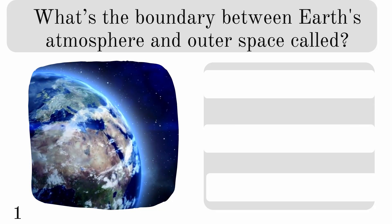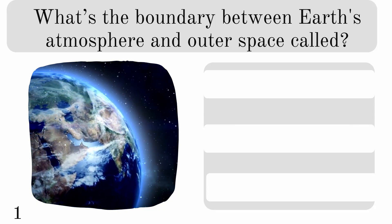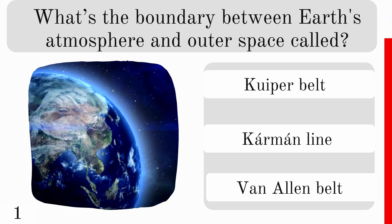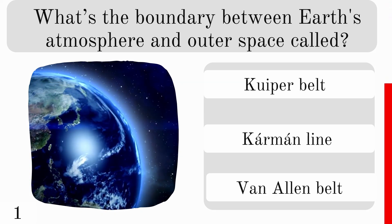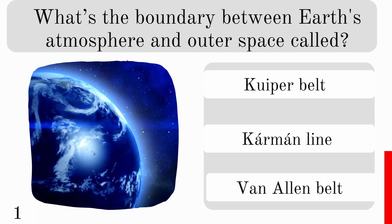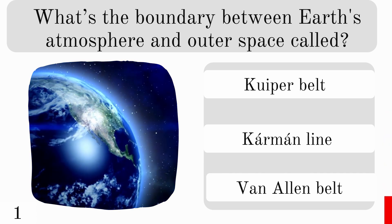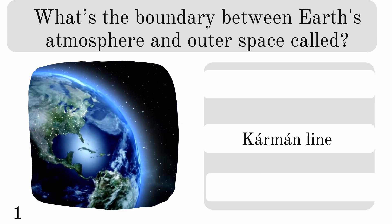What's the boundary between Earth's atmosphere and outer space called? Is it the Kuiper belt, the Kármán line, or the Van Allen belt? And the correct answer is the Kármán line.